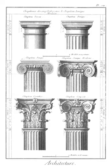Hip roof: a type of roof where all sides slope downwards from the ridge to the eaves. Hyphen: a structural section connecting the main portion of a building with its projecting dependencies or wings.